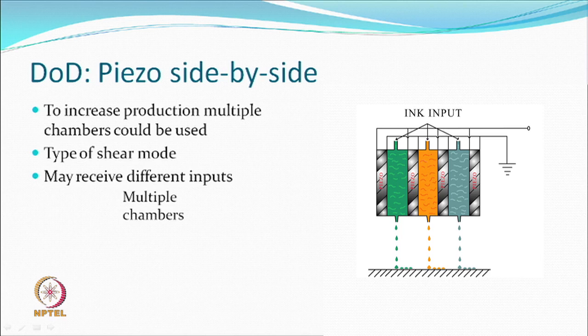Multiple chambers can receive different inputs at different times. All of them can fire simultaneously if the whole area requires the same color. If fewer drops need to be generated, you generate only one or two — giving more control. One control is the frequency, and the other is the voltage. If voltage cannot be easily changed, you can ensure some chambers fire while others do not. Multiple chambers working side by side give you great flexibility.